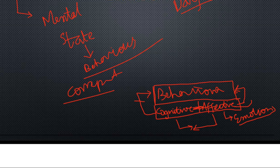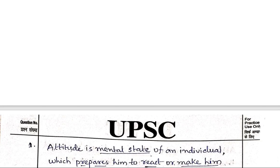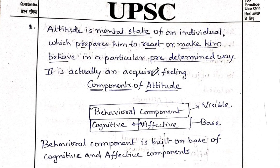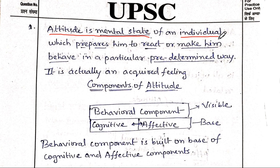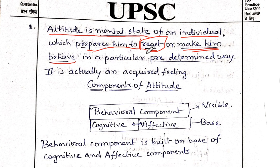So we are ready to go and look at the answer — how it could be written in seven minutes or even less, so that you can produce a good answer which could fetch you marks and also save time for next questions. As we were discussing, we started with the definition of attitude, where we mention attitude as a mental state of an individual — not a herd mentality, not the mentality of a group or societal behavior. It is an individual mental state which prepares him to react or make him behave, not in impulsive reactions but sustained reactions that will last longer. It prepares him to behave in a particular predetermined way.